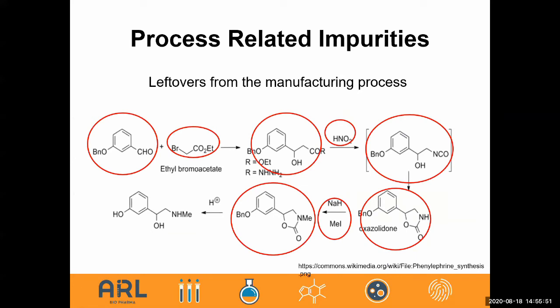It's also important to look at process impurities — related impurities that are leftover from the manufacturing process. When you're testing a pure bulk substance, the original manufacturer may have some leftover related compounds that need to be known and included in the method. A perfect, timely example is the issue raised this morning regarding methanol as an impurity in ethanol or isopropanol — you do not want toxic impurities present in the drug product being given to a patient.